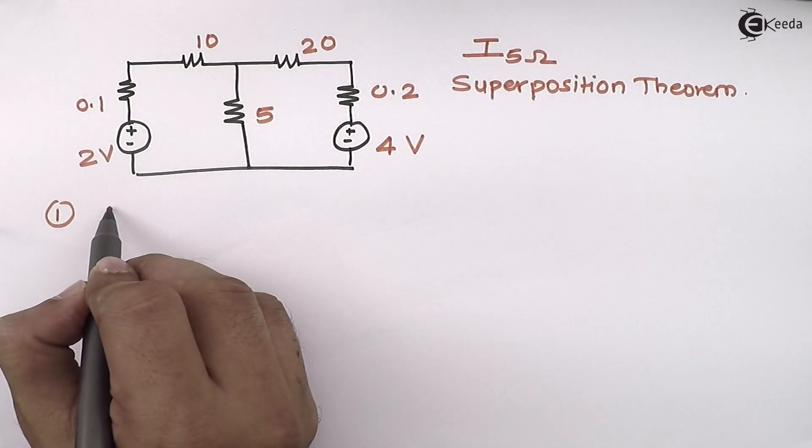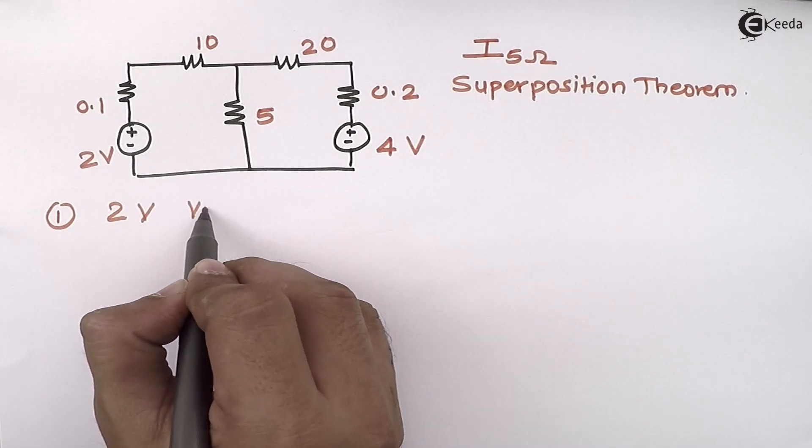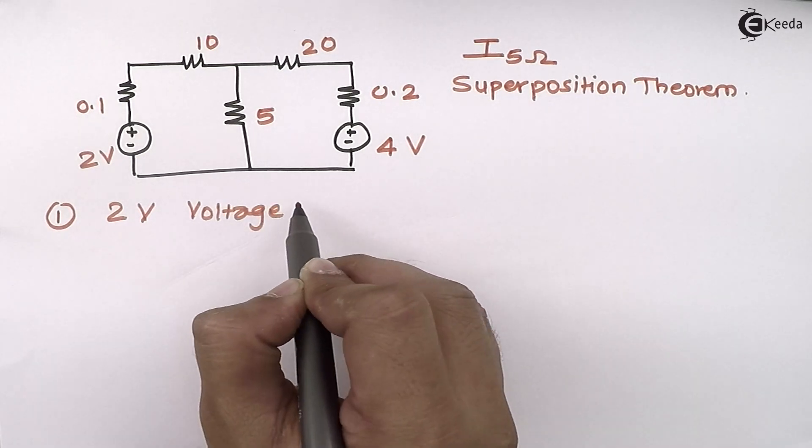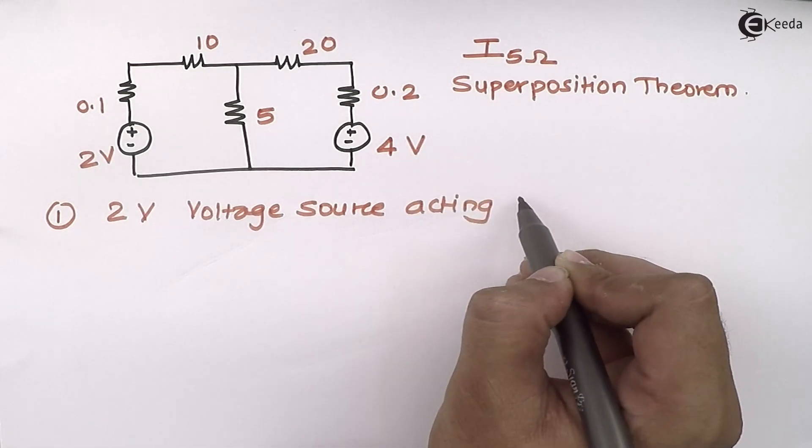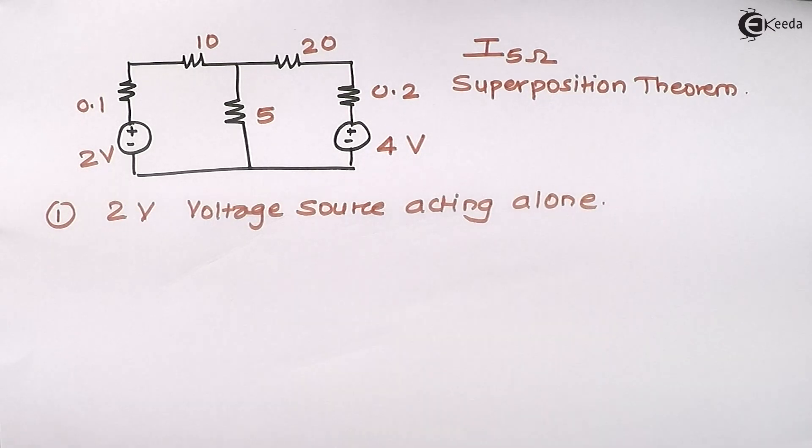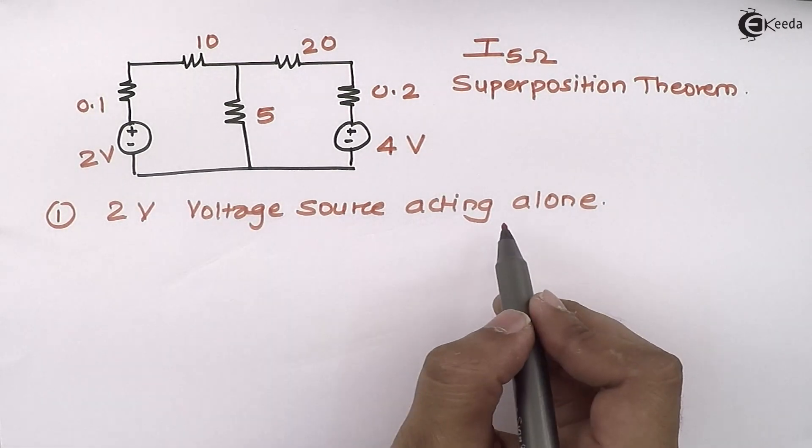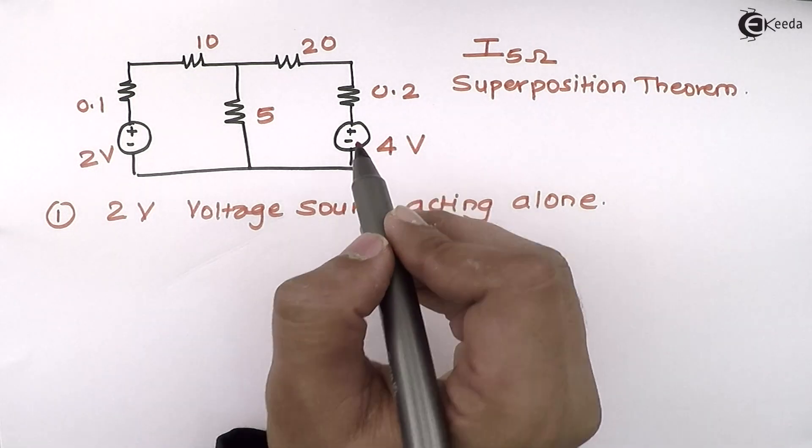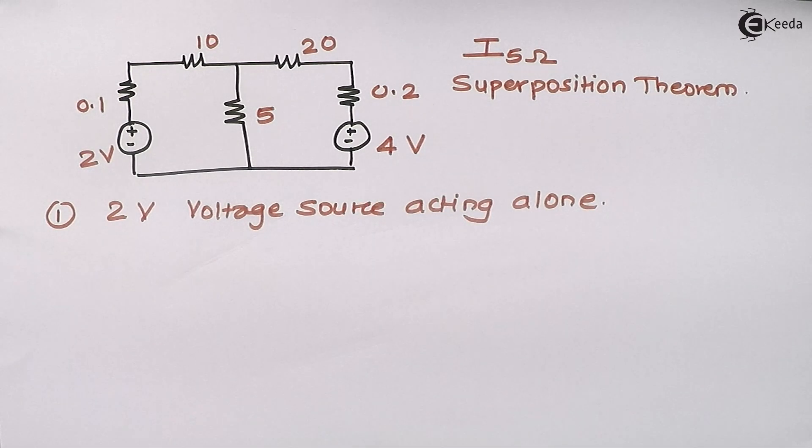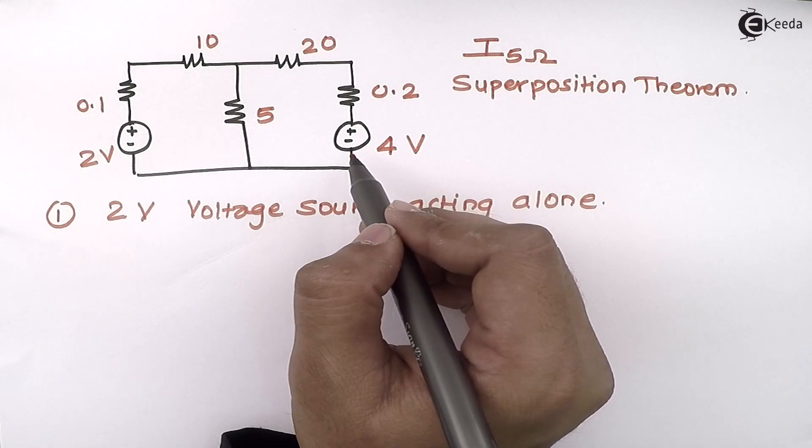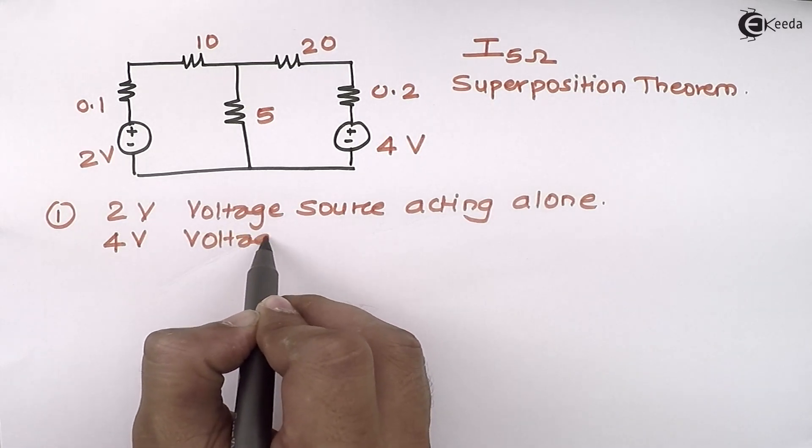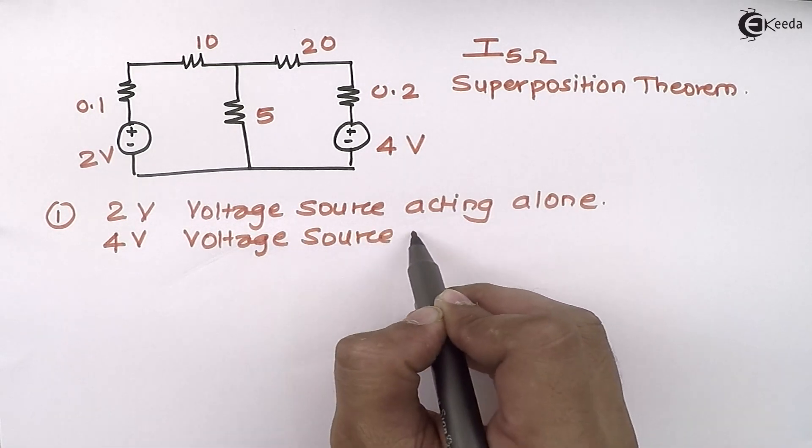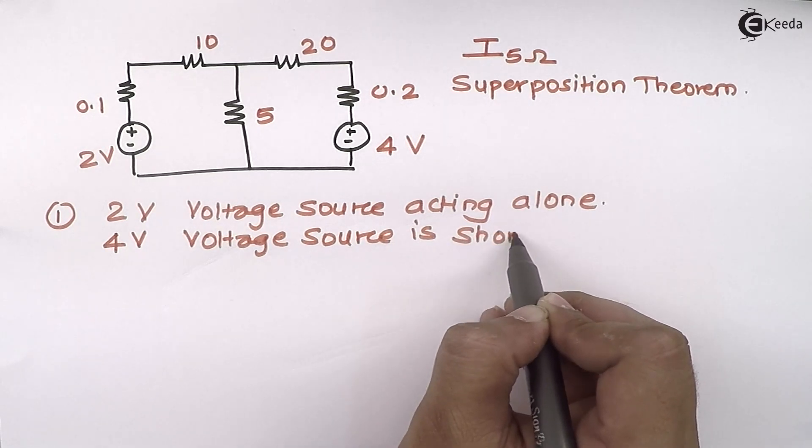So I will consider the 2 volt voltage source acting alone. When I consider the 2 volt voltage source acting alone, another voltage source needs to be short circuited because we have discussed the internal resistance of an ideal voltage source is zero. Zero resistance implies it's a short circuit, so the 4 volt voltage source is short circuited.